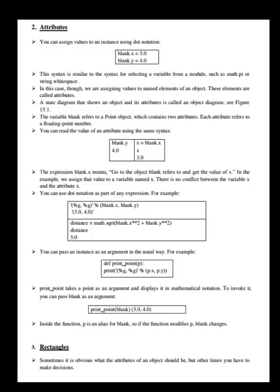The second topic is attributes. You can assign values to an instance using dot notation — see the box here. This syntax is similar to selecting a variable from a module such as math.py or string.whitespace. In this case, we are assigning values to named elements of an object. These elements are called attributes. A state diagram that shows an object and its attributes is called an object diagram — see figure 15.1. The variable blank refers to a point object which contains two attributes. Each attribute refers to a floating point number. You can read the value of an attribute using the same syntax. The expression blank.x means go to the object blank refers to and get the value of x. In the example, we assign that value to a variable named x. There is no conflict between the variable x and the attribute x.